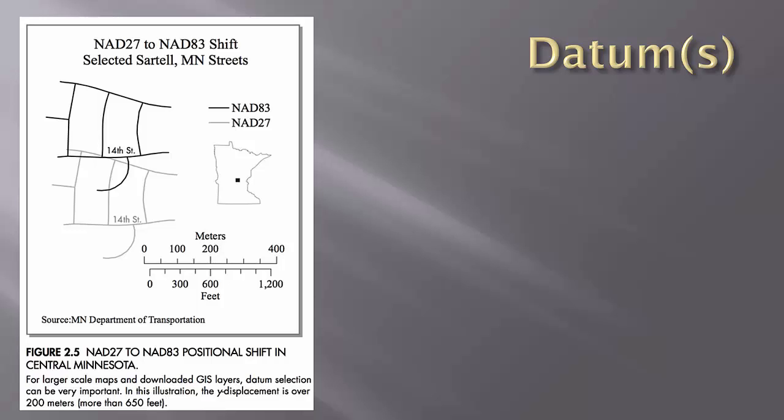The North American Datum of 1983, abbreviated NAD 83, uses the Geodetic Reference System 1980, or GRS 80 ellipsoid, which has a tie-in point at the center of the Earth. You will hear these terms come up as we begin to work with ArcGIS in the labs. Referencing the wrong datum can result in positional errors of hundreds of feet depending on place and datum used, as noted in Figure 2.5, showing two items not lining up.